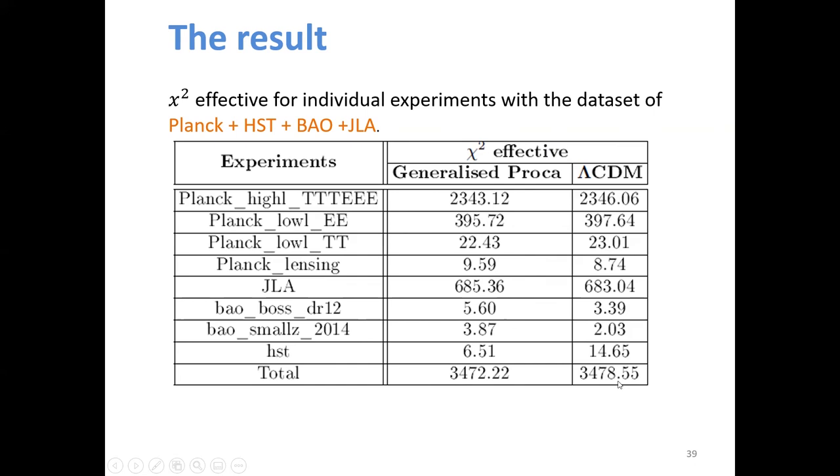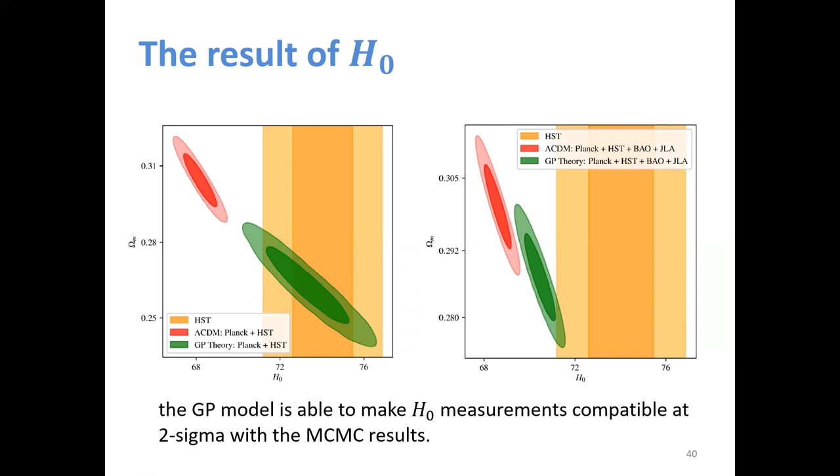Now we focus on the H0 result for Proca theory and the lambda CDM. This one is HST observational result and the green one is the fitting result of Proca theory. We can see that has no tension with the HST result and can be distinguished very well with lambda CDM's global fitting result. And this result is based on all data sites. We can see the green one of Proca theory also more closer to the HST result and much better than lambda CDM. The generalized Proca model is able to make H0 measurement comfortable at 2 sigma with MCMC result.